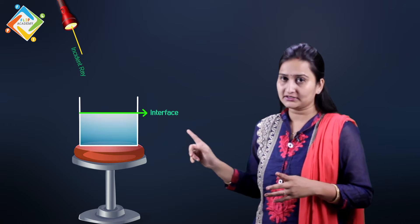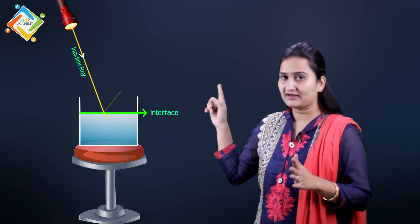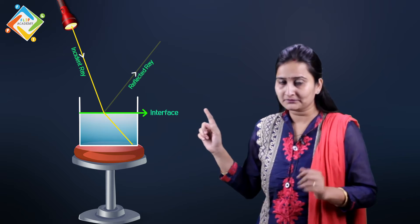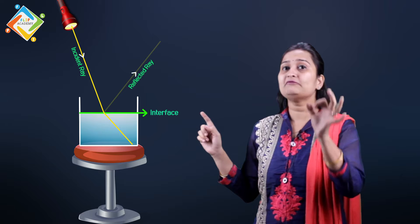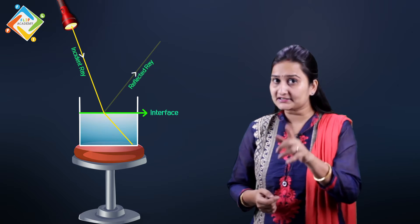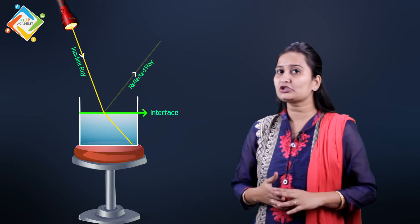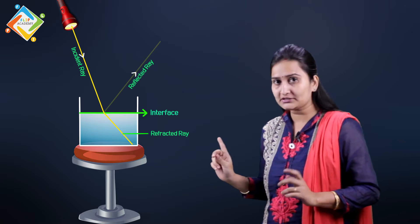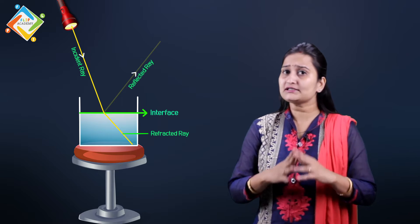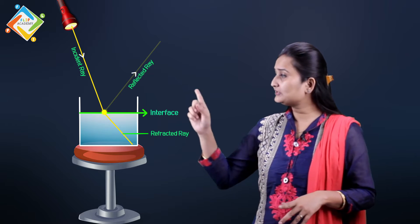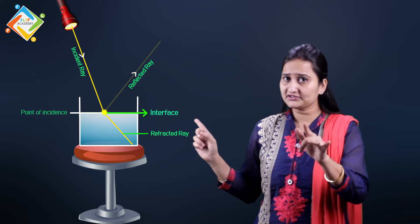Now, look at this condition. If you have a source of light, let's say torch, there will be light incident. If you have a source of light, some light will reflect that is not our concern. Some light will further transmit inside the water and that is called refracted ray. Now, in this condition, which is the point of incident?